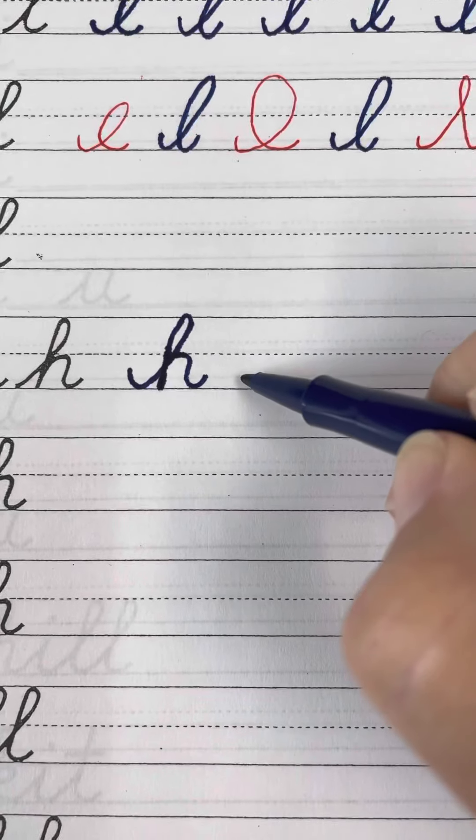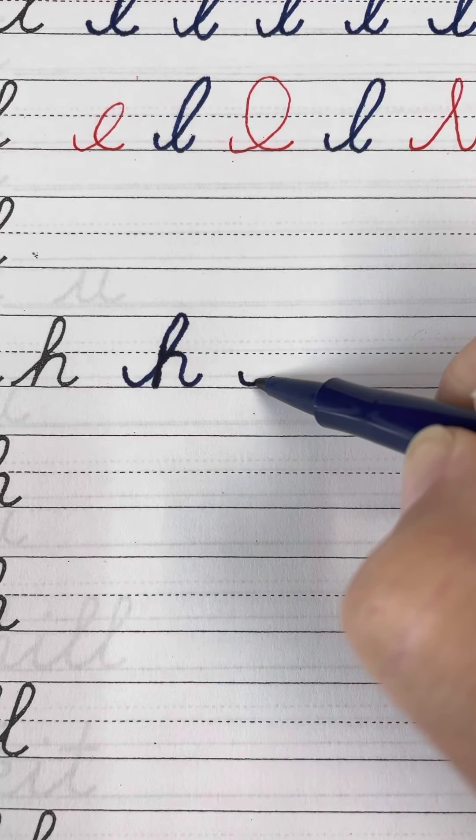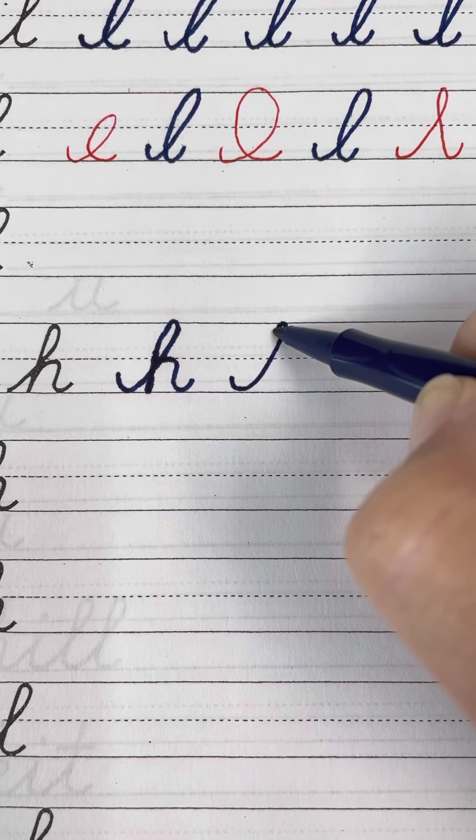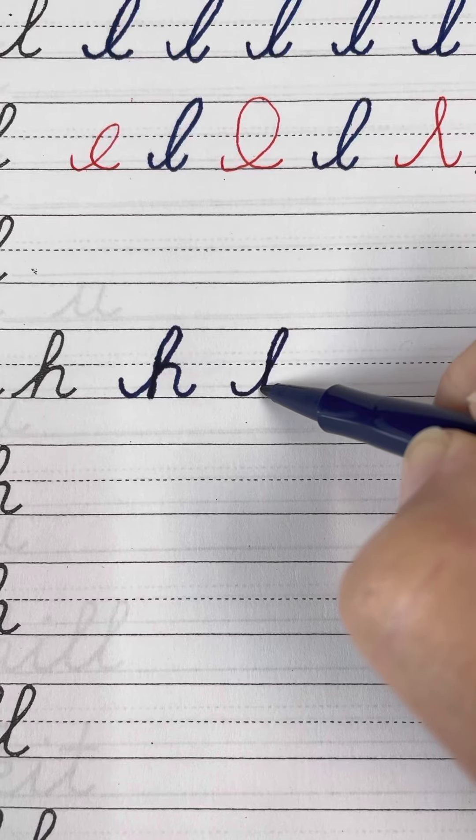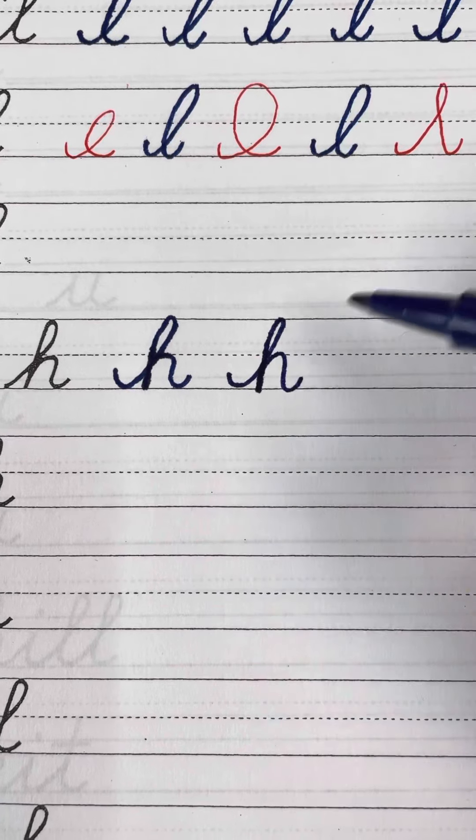Okay watch again. So I'm gonna start just like I did the l. Scoop up, touch the top, cross over at the dotted line, and go straight down. Retrace and make my hill.